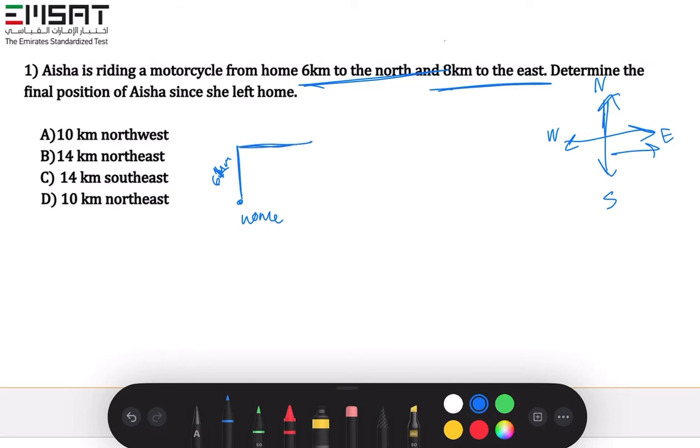So eight kilometers - this is gonna turn into a right angle and in this case a right triangle. So the final position of Aisha is gonna be equal to the length of this. Let's name it D.